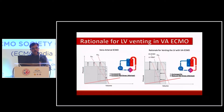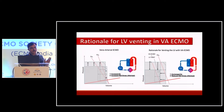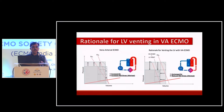Looking at the PV loop of the left ventricle, after placing VA ECMO the arterial elastance increases as well as wall stress. However, after placing an LV vent, the arterial elastance does not change but there is significant reduction in wall stress. This helps in the recovery of the failing left ventricle.